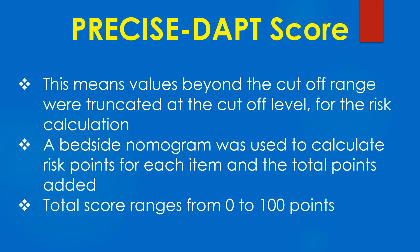Values beyond the cut-off range were truncated at the cut-off level for the risk calculation. A bedside nomogram was used to calculate risk points for each item and the total points added. Total score ranges from 0 to 100 points.